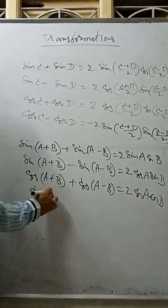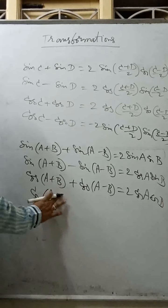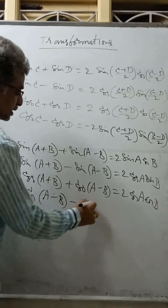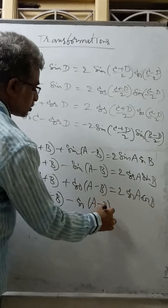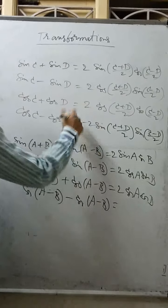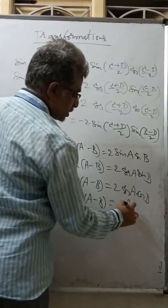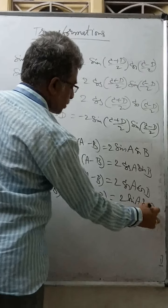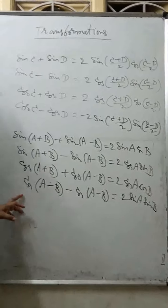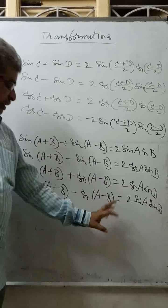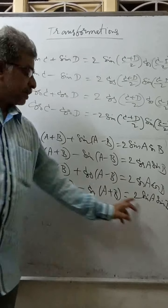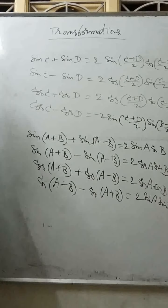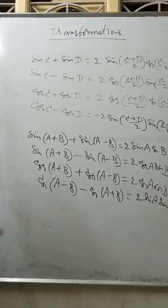Cos(A-B) minus cos(A+B): we reverse the order so that the minus is removed, giving 2 sin A sin B. Writing it as: cos(A-B) minus cos(A+B) equals positive 2 sin A sin B. These are called transformation formulas.